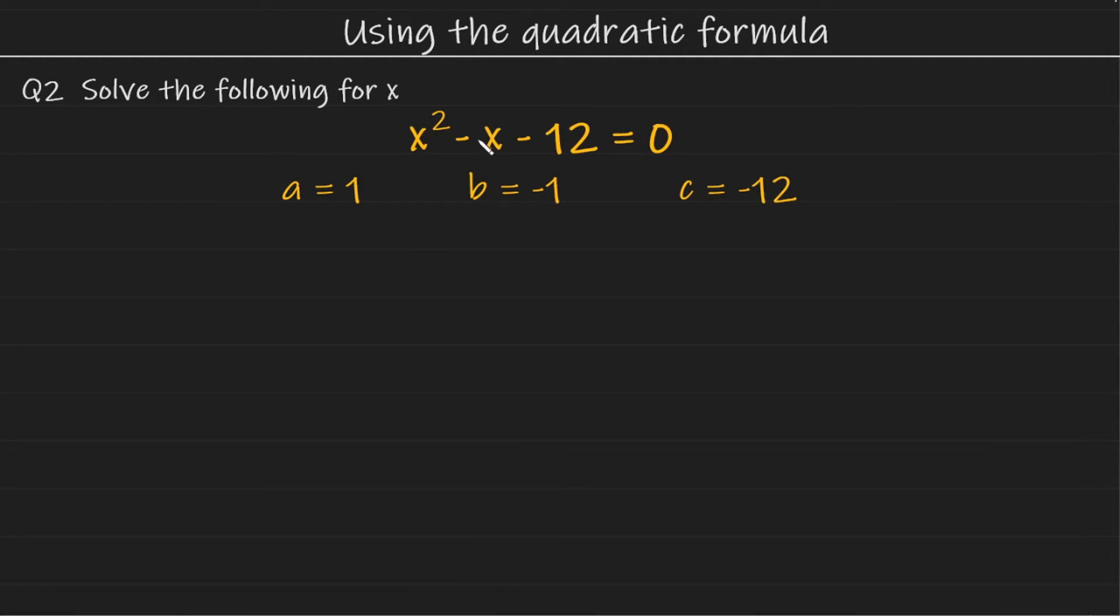The coefficient of x, which is again not visible, but we know to be minus 1 since there's a minus operation here. And finally for c, it's going to be minus 12.